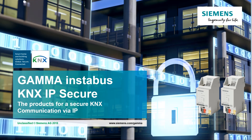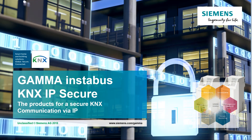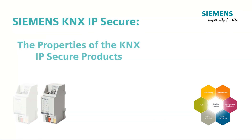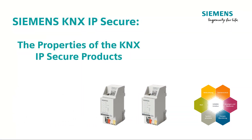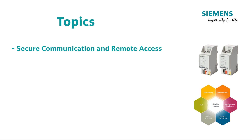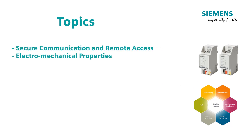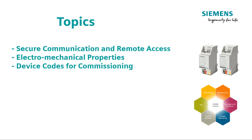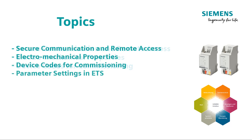Siemens KNX IP Secure Products Properties. In this chapter we will talk about the following topics: Secure Communication and Remote Access, Electromechanical Properties of KNX IP Secure Products, and all device codes required for commissioning and the parameterization in ETS.